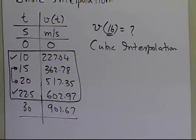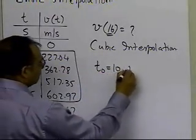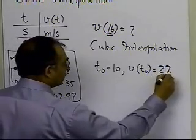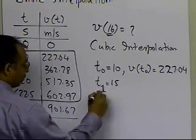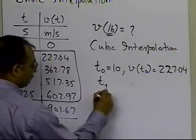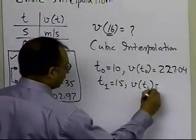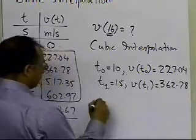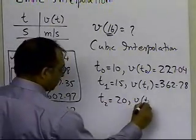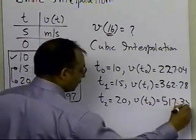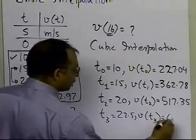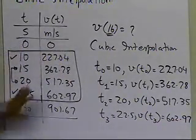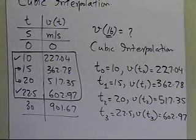Let's write this down: t0 = 10, velocity at t0 = 227.04; t1 = 15, velocity at t1 = 362.78; t2 = 20, velocity at t2 = 517.35; and t3 = 22.5, velocity at t3 = 602.97. We are isolating the four data points chosen for cubic interpolation so it's clear what subscripts of time and velocity we have prescribed to them.